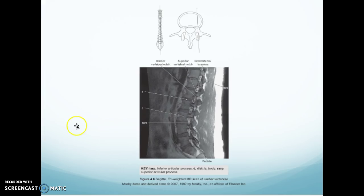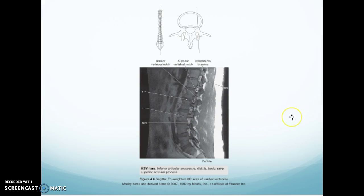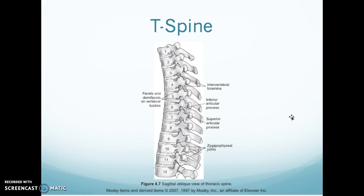This is an MRI T1 sagittal. We have your inferior vertebral notch, your superior vertebral notch, your intervertebral foramen, and your spinous processes in the back. You have your disc space with the body and your superior articular process there with your pedicle — you can see a piece of your pedicle there with your T-spine.